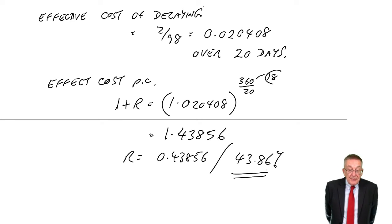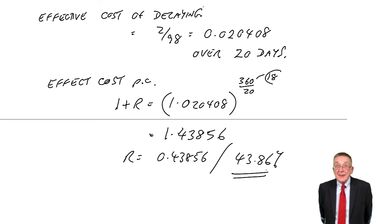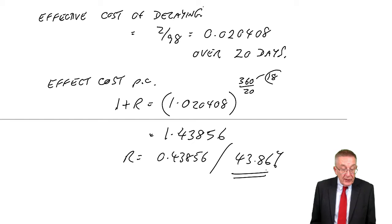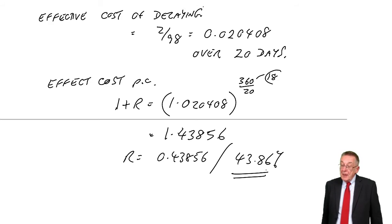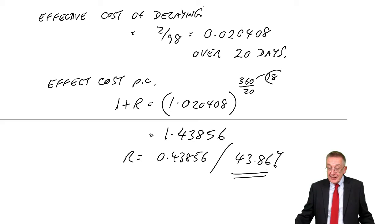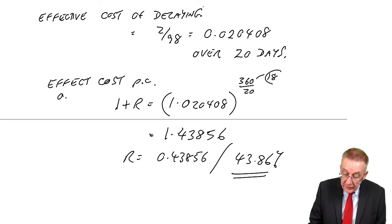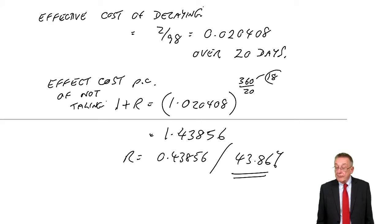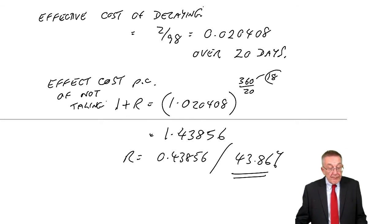That is the cost of not taking the discount, or the benefit of taking the discount, which is enormous. I haven't asked for a decision here, so we don't know what the overdraft interest is, but that does seem to be enormous. I don't think we would delay, I think we would definitely take the discount. This is the effective cost of not taking the discount, of delaying. Not taking the discount is effectively costing us 44% a year.